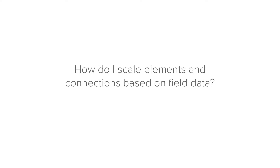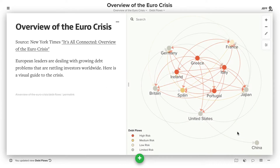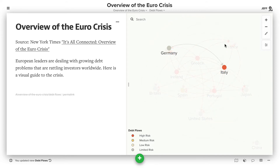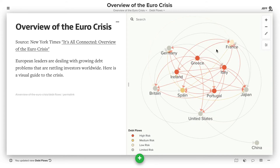In this episode, we're going to explore the question: how do I scale elements and connections based on field data? We're looking at an older map about the European debt crisis. We have elements representing countries, and then we have lines connecting countries based on the relative amount of debt between two countries.